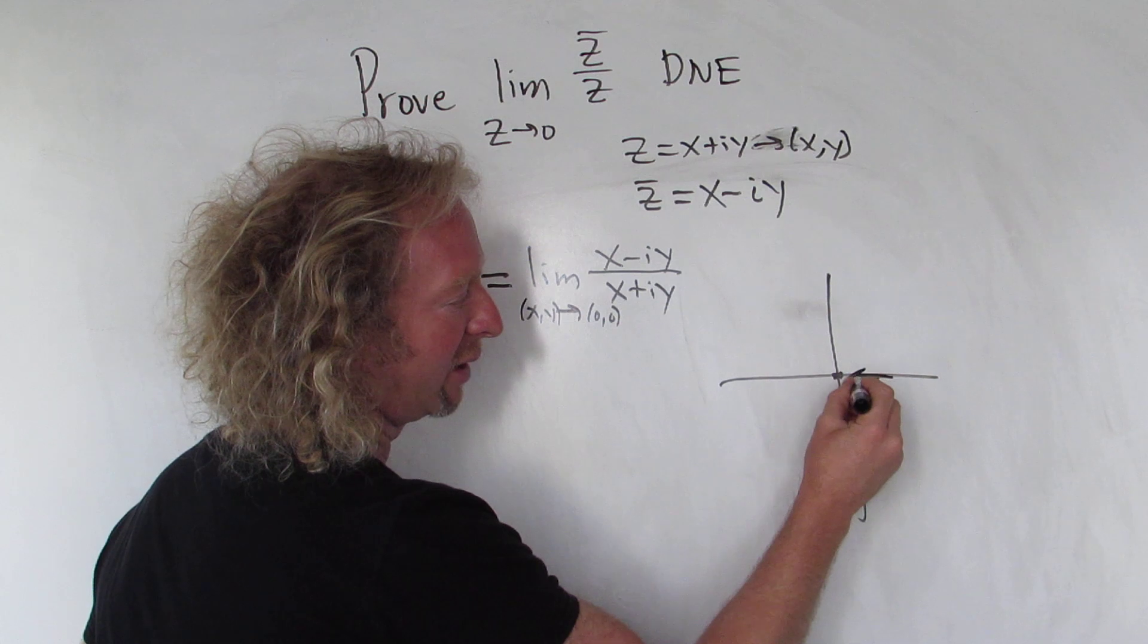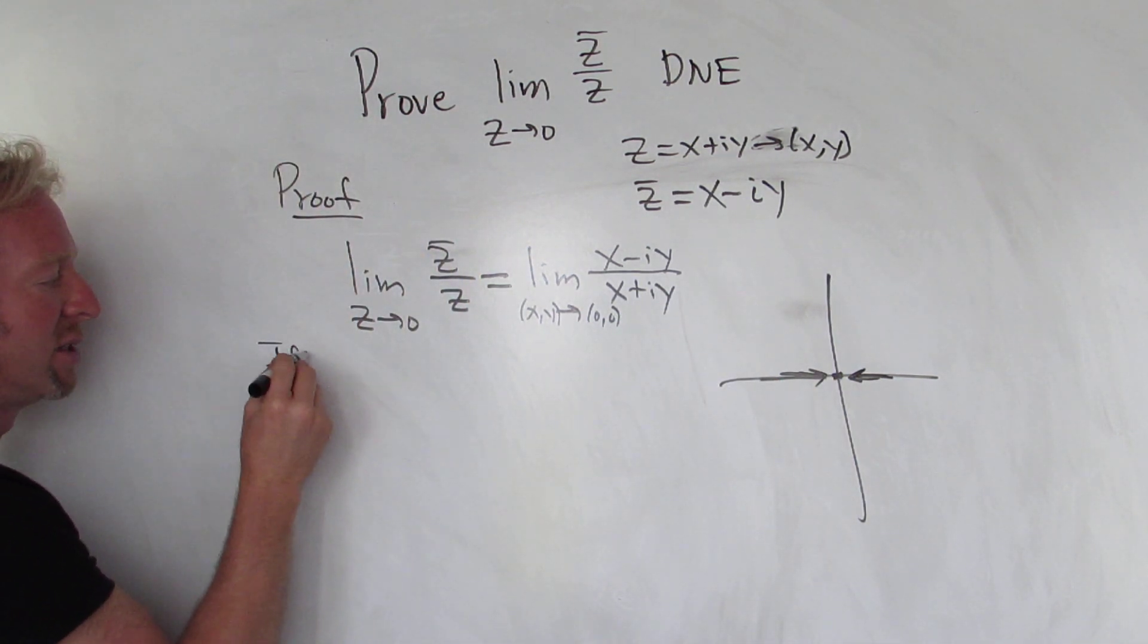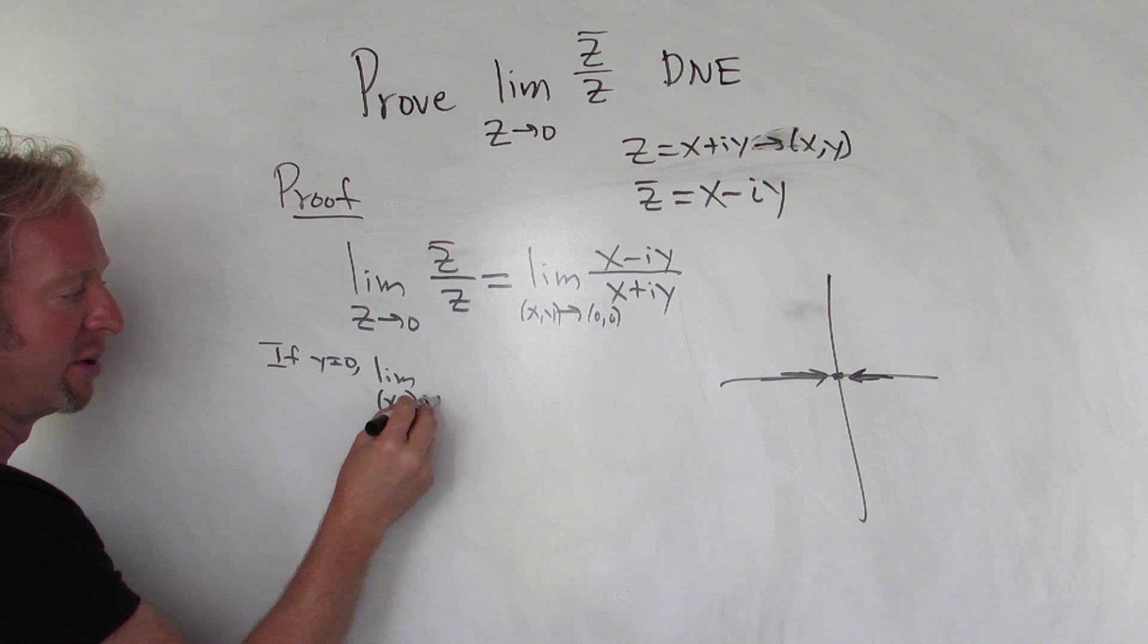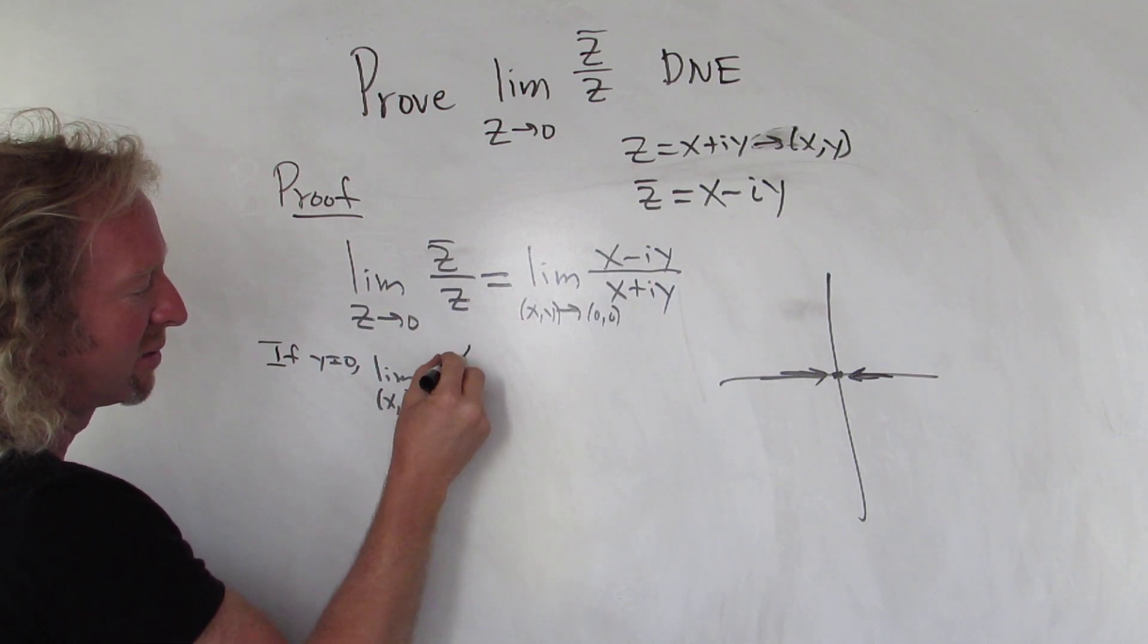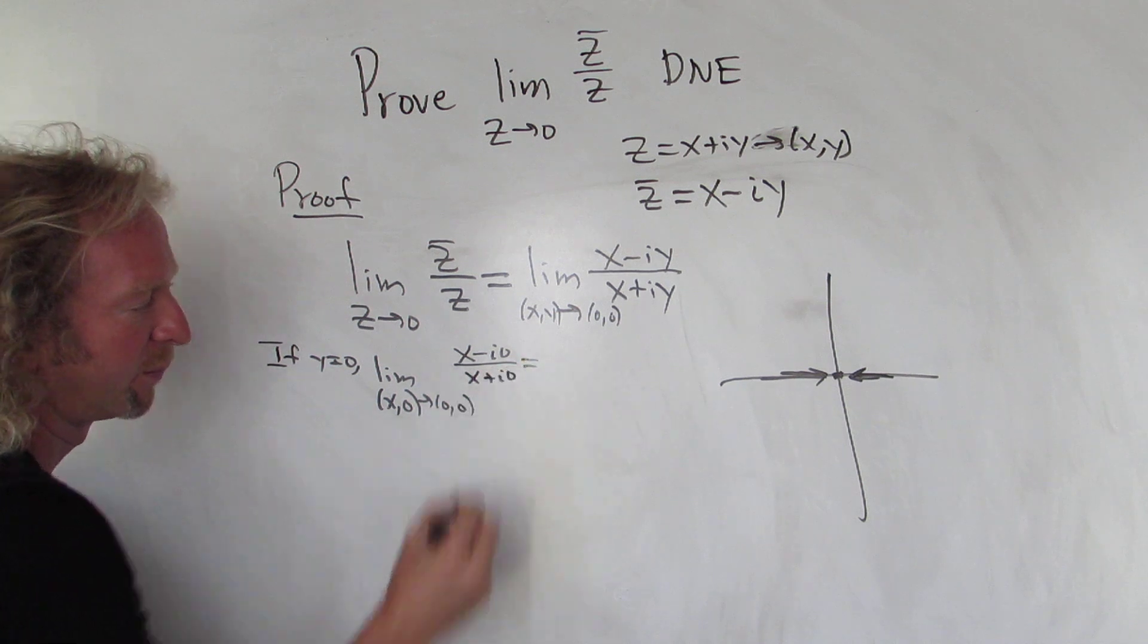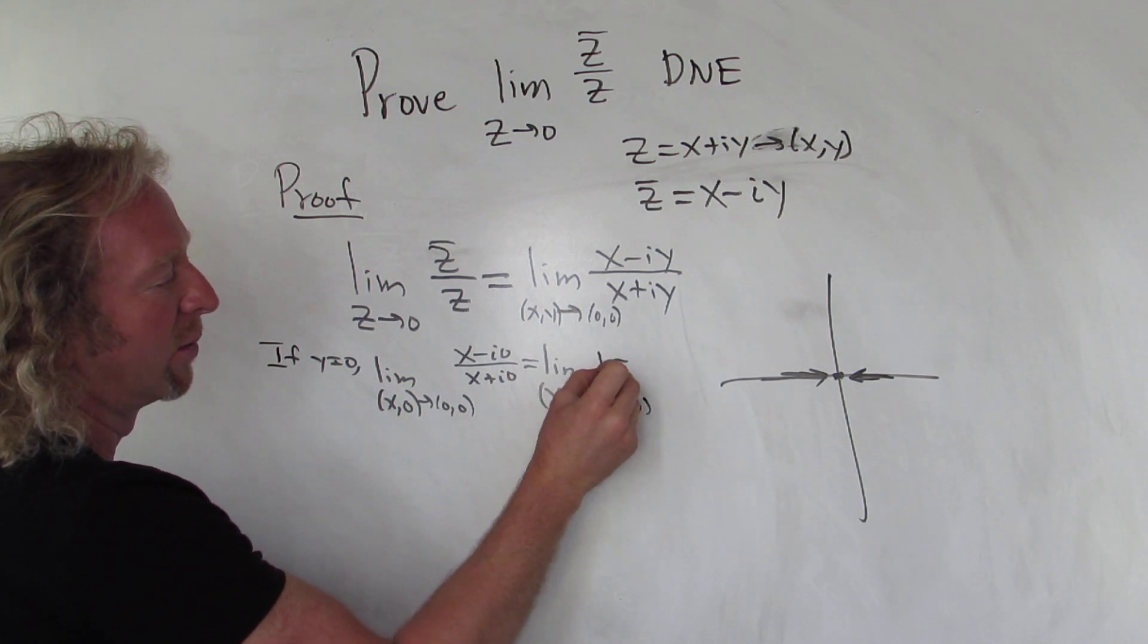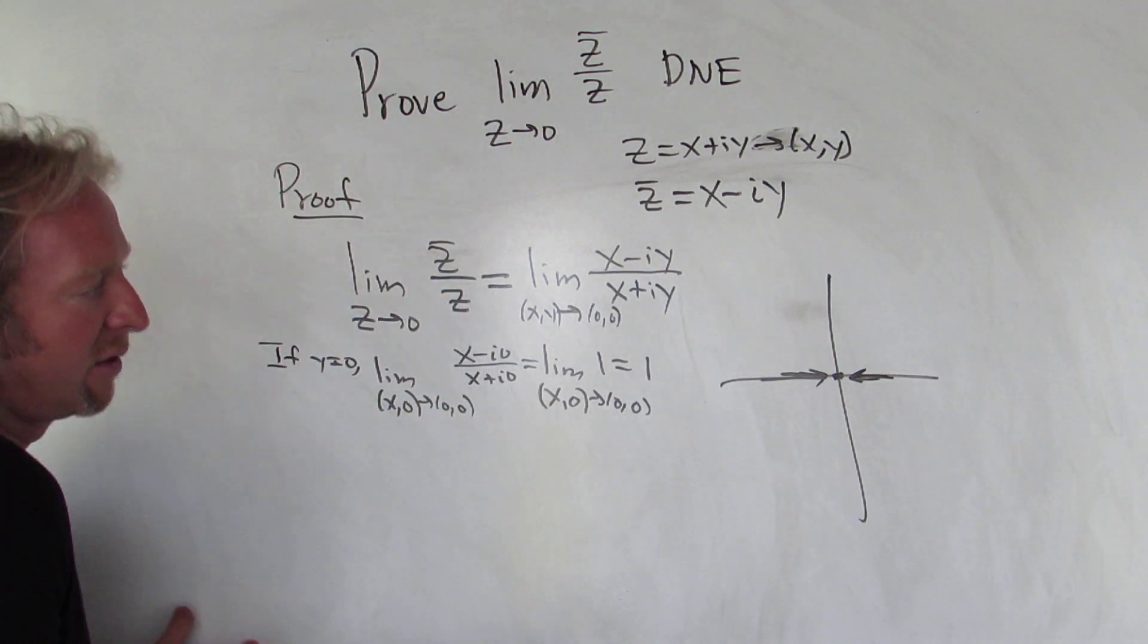So first let's try approaching zero along the real axis. To do that we can set y equal to zero. So if y equals zero, we can take the limit as (x,0) approaches (0,0). Then we can set all the y's equal to zero, so we get x minus i(0) over x plus i(0). The x's are going to cancel and we're going to get one. So if we approach zero along the real axis we get one.